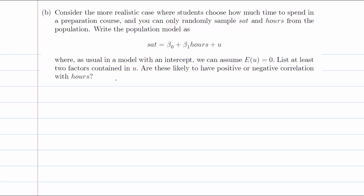We need to find two factors that are contained in U, so that are not included in the model directly. And we have to check if they are likely to have a positive or negative correlation with hours. You can find a very broad range of factors that are correlated with hours. I'm just giving some examples here.